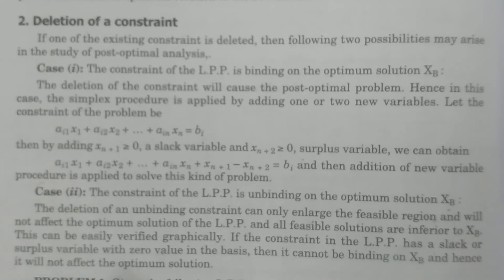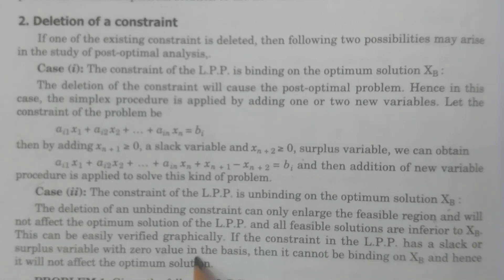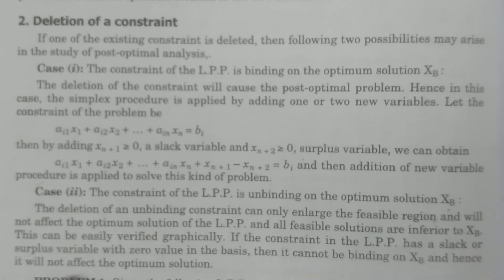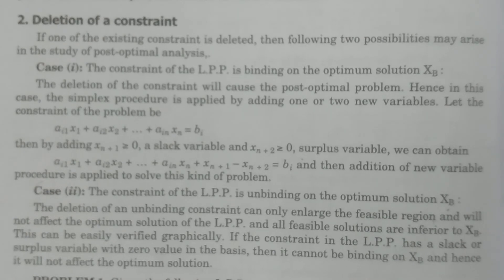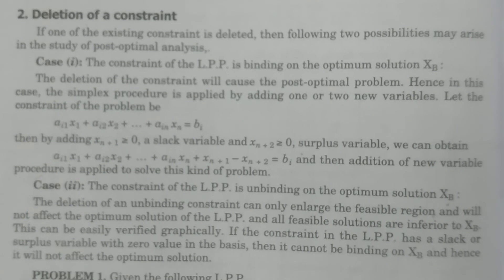This can be shown by a graphical method. If the constraint of the LPP has a slack or surplus variable with a zero value in the basis, then it cannot be binding on xB. Hence it will not affect the optimum solution. This covers Case 1 and Case 2 for deletion of a constraint. Thank you very much.